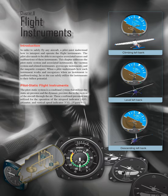The pitot-static system is a combined system that utilizes the static air pressure and the dynamic pressure due to the motion of the aircraft through the air. These combined pressures are utilized for the operation of the airspeed indicator (ASI), altimeter, and vertical speed indicator (VSI).